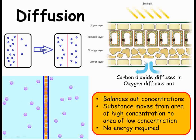Leaves are adapted to allow gases to diffuse in and out in this way. Stomata are openings on the underside of the leaf that allow carbon dioxide to diffuse in and oxygen to diffuse out. The more the leaf is photosynthesizing, the more carbon dioxide it uses, so the greater the concentration gradient between the inside and outside of the leaf. This increases the rate of diffusion, drawing more carbon dioxide in where it's needed. The same thing happens in reverse to move the oxygen out of the stomata into the air.